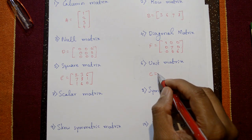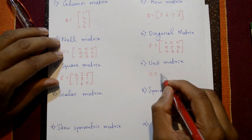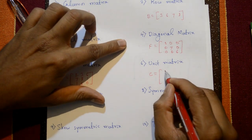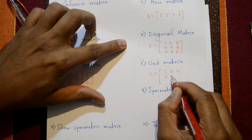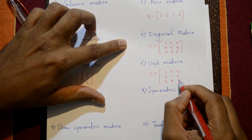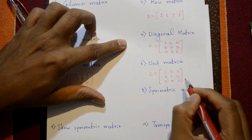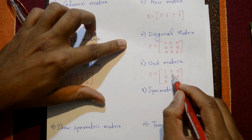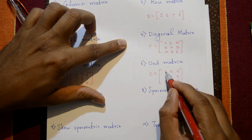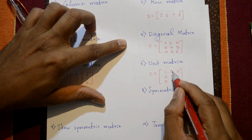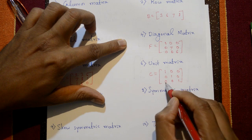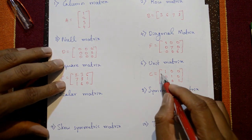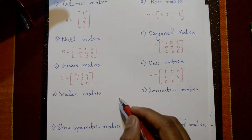The unit matrix is also a square matrix where the principal diagonal elements all contain 1 — that is, 1, 1, 1 — and all non-diagonal elements are zeros. This is called a unit matrix.